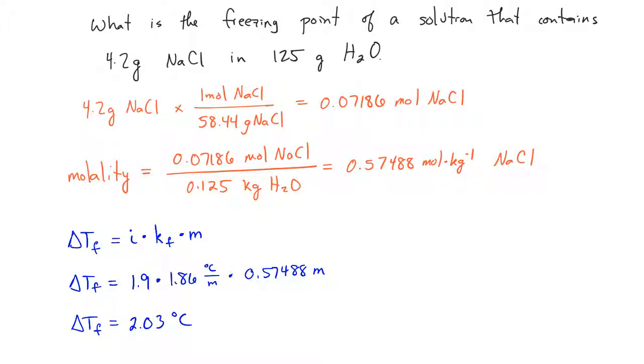So the freezing point then is going to be negative 2.03°C. That's because I'm going to have to subtract my freezing point depression from the actual freezing point of water.